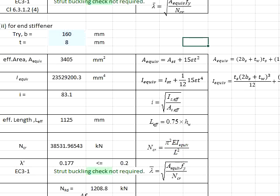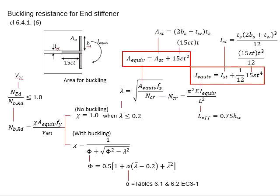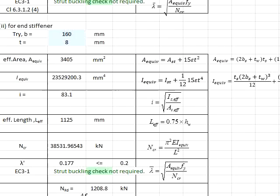For the end stiffener, the effective area is given here. Therefore, the equations for the effective area and also the second moment of inertia will be slightly different than the intermediate stiffener. Substitute the relevant value. You will obtain the value here.